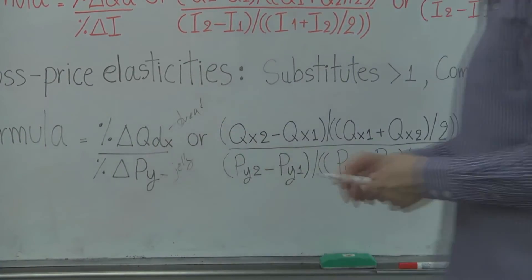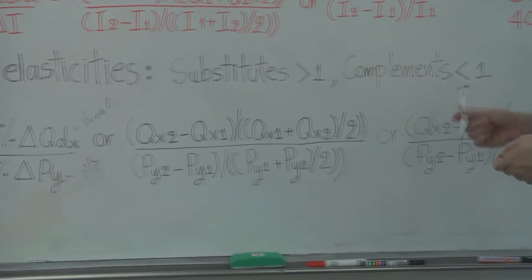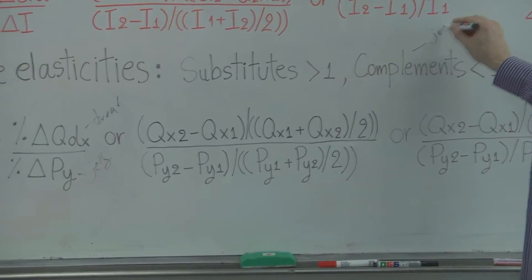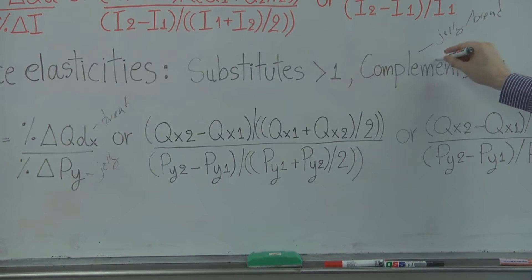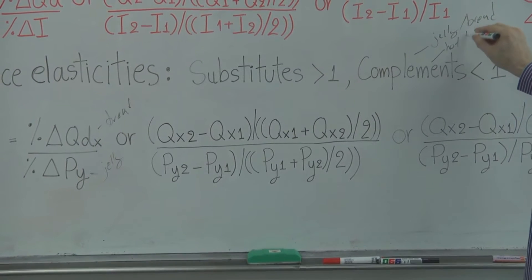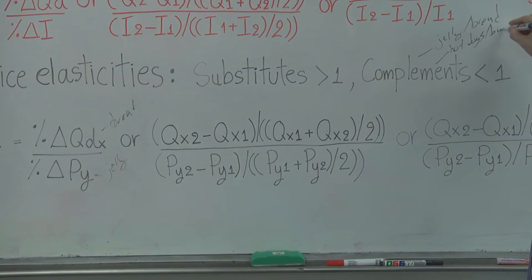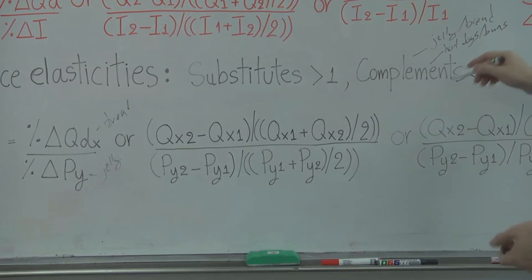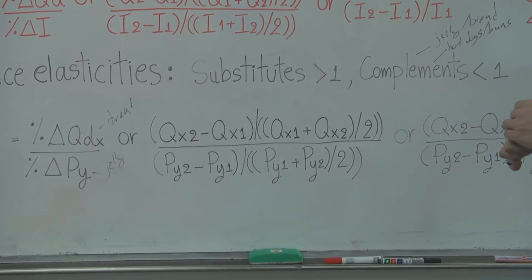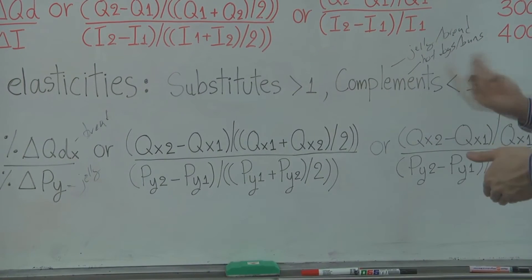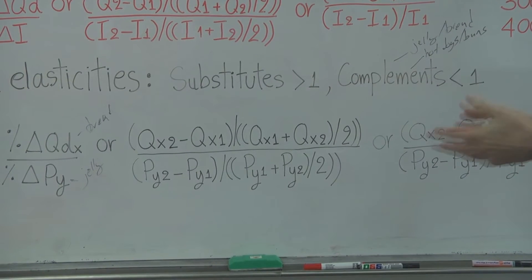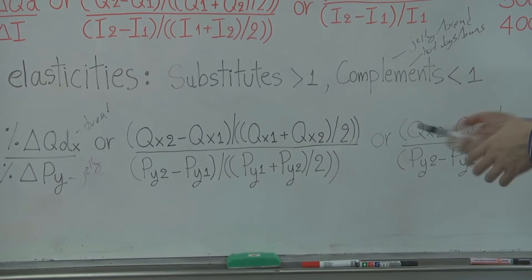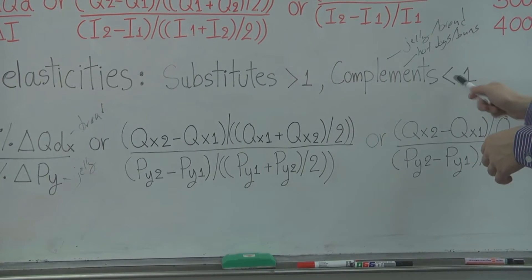If yes, then what we have is a complement. So jelly and bread, hot dogs and hot dog buns, ketchup and french fries. So if the price of french fries doubles, then will the quantity demand for ketchup go down? Probably. So they would be complements if your answer is less than one.